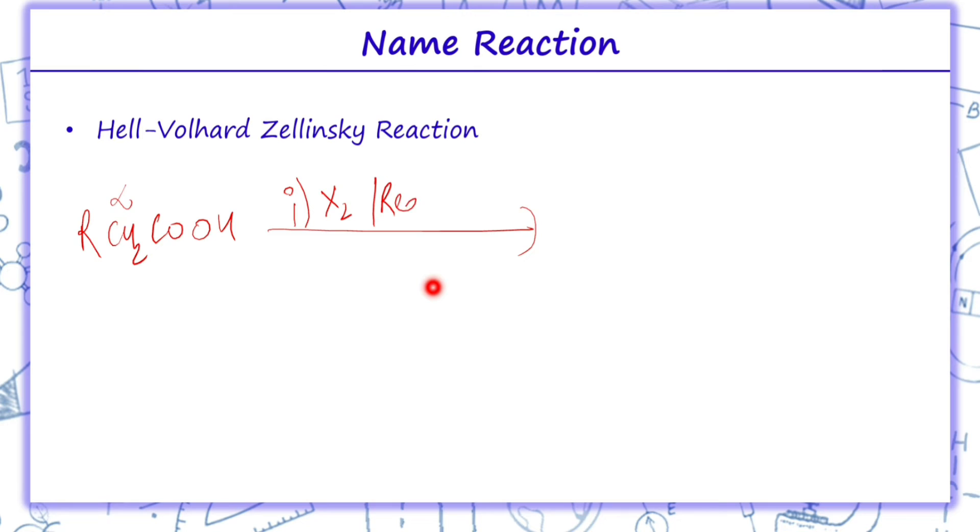So whatever halogen may be, on treatment with red phosphorus they give alpha halo carboxylic acid. This is known as alpha halogenation which is Hell-Volhard-Zelinski reaction.